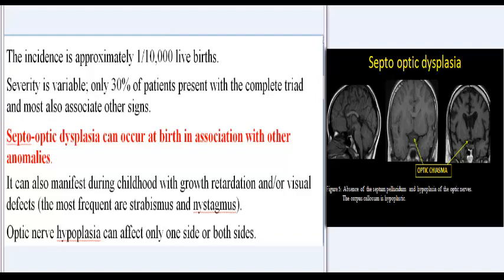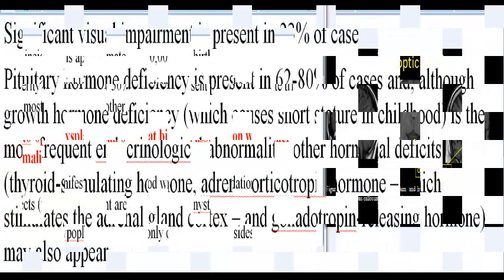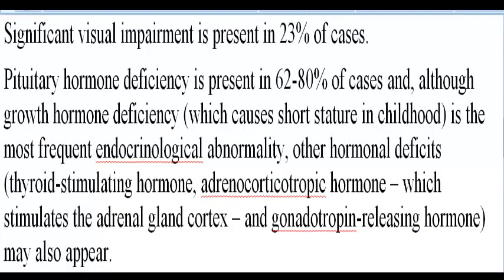Optic nerve hypoplasia can affect only one side or both sides. Significant visual impairment is present in 23% of cases.